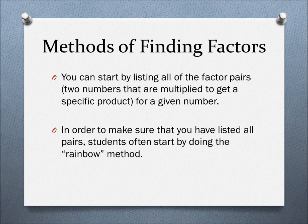Methods of Finding Factors: You can start by listing all the factor pairs for a given number, or in order to make sure that you have listed all the pairs, students can work on what is called the rainbow method.